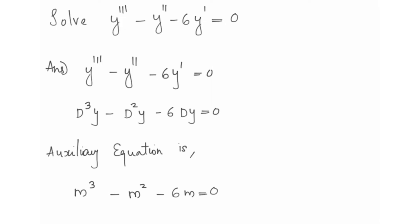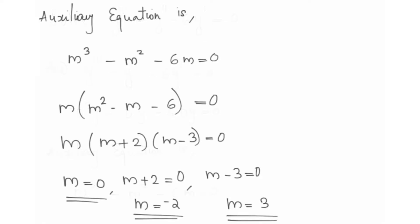We have a third-degree equation. We take out m, giving m·(m² - m - 6) equals 0.